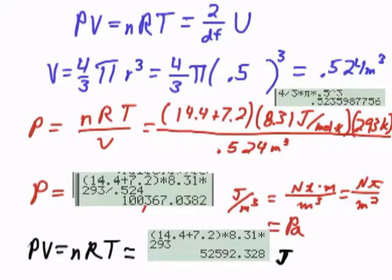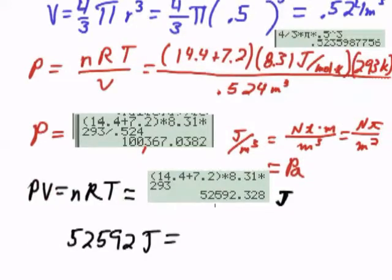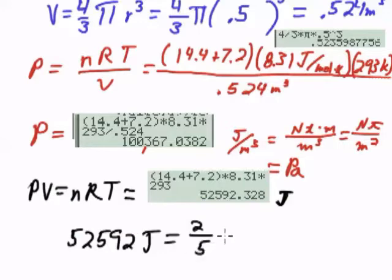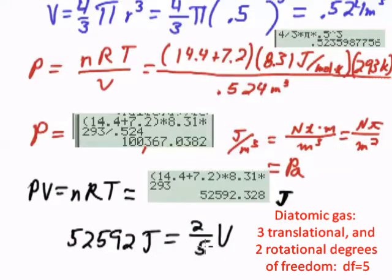And we want the internal energy. 52,592 joules is only a portion of the internal energy, which is 2 over 5 times U. Because we have 5 degrees of freedom in the diatomic gases.